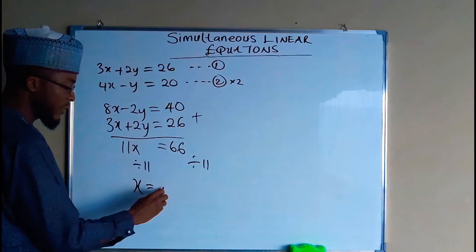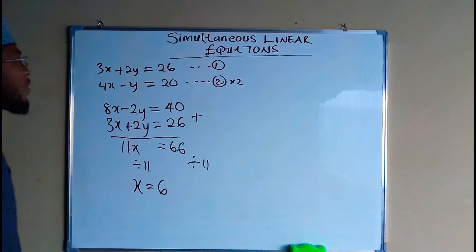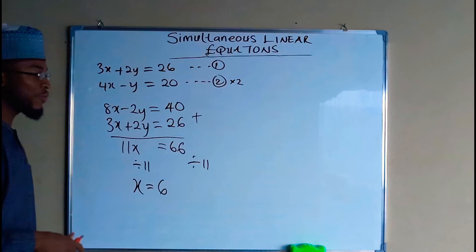Now we have found the value of x to be equal to 6. Now we need to find the value of y by substituting the value of x in either equation 1 or equation 2. In equation 1 we have 3x plus 2y equals 26.